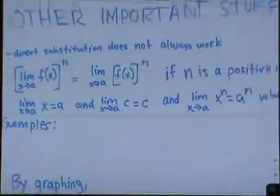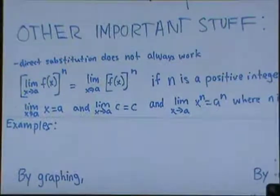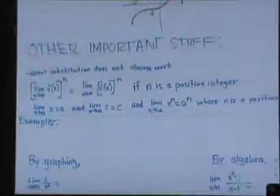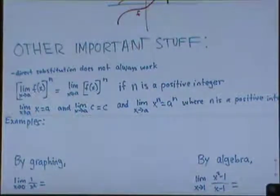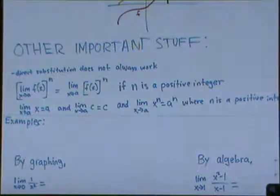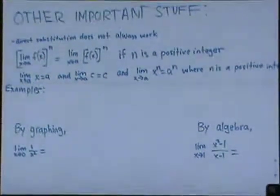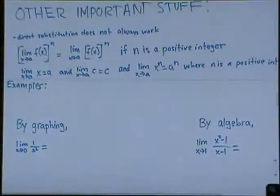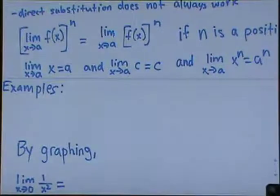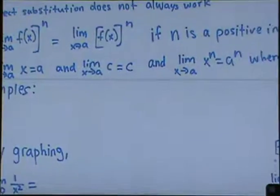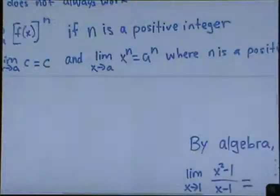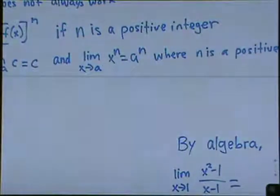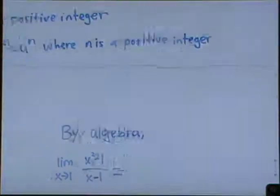It's also important to know that direct substitution does not always work, and we'll have an example with that. Another limit law: the limit as x approaches a of [f(x)]^n equals [limit as x approaches a of f(x)]^n, and you can do the same with roots, but n must be a positive integer. Also, the limit as x approaches a of x equals a, the limit of a constant is just that constant, and the limit as x approaches a of x^n equals a^n where n is a positive integer.